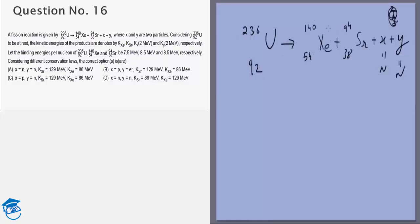So these two will release an energy equal to 140 multiplied by 8.5 plus 94 multiplied by 8.5, and minus the energy absorbed by this will be 236 multiplied by 7.5, because 7.5 is the binding energy per nucleon. There are a total of 236 nucleons.